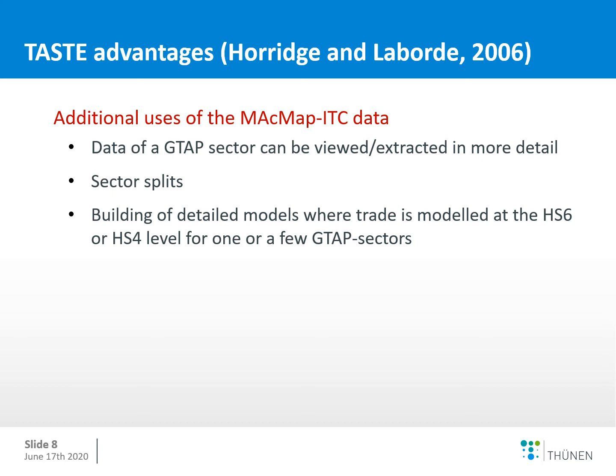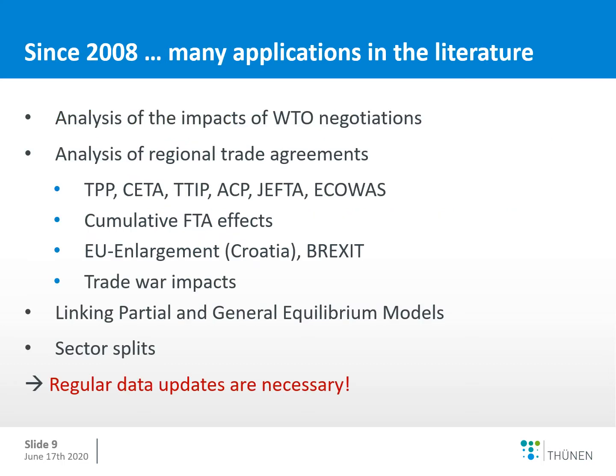It is also possible to implement sector splits and to build more detailed models where trade is modeled at the six or four digit level, and to include new GTAP sectors. TASTE was initially used to analyze the impacts of WTO negotiations, but it is now mainly used for regional trade agreements. Studies have been done on TPP, CETA (Canada-EU trade agreement), TTIP, the African-ACP agreement, the Japan-EU agreement, the ECOWAS agreement, and cumulative effects of free trade agreements.